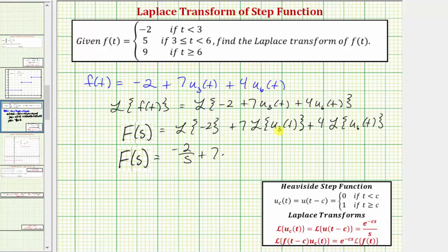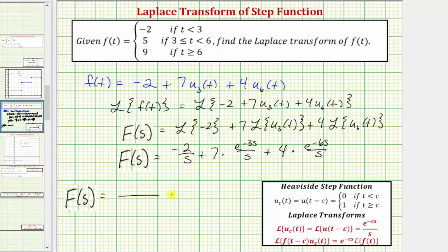Then plus seven times the Laplace transform of u sub three of t. Using our formula where c equals three, we get e to the negative three s divided by s. So seven times e to the negative three s over s. Plus four times the Laplace transform of u sub six of t, which gives four times e to the negative six s over s. With a common denominator of s, big F of s equals the quantity negative two plus seven e to the negative three s plus four e to the negative six s, all over s.